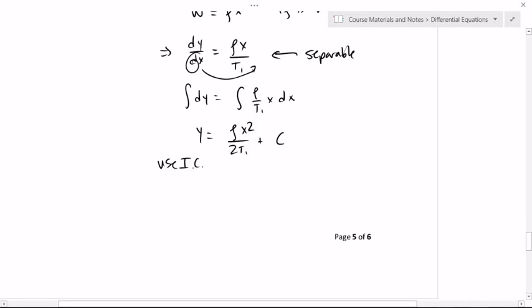Now, if I use my initial condition, I'll be able to find c. There's still a couple of unknowns. Rho is given, but t1 I don't know yet. I'll show you how to find that in just a second. So y at 0 would be c has to equal a. So that means my function now, y of x, is rho over 2 t1 x squared plus a.